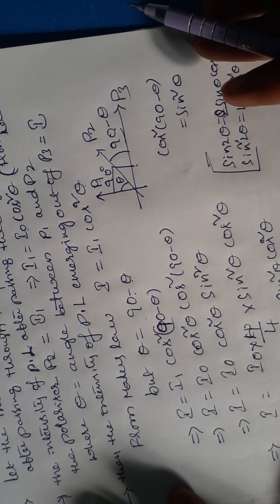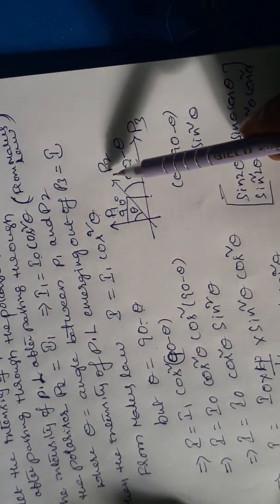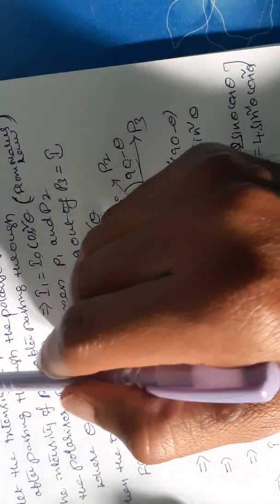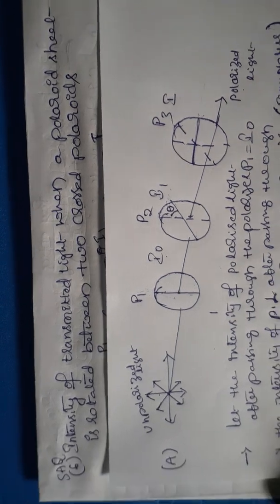This is the intensity of polarized light passing through a polarizer rotating between two crossed polarizers. P1 and P3 are called crossed polarizers, and P2 is the polarizer rotating between them. You can review the question and answer once again.